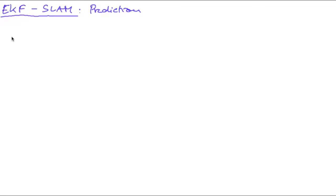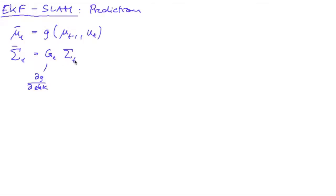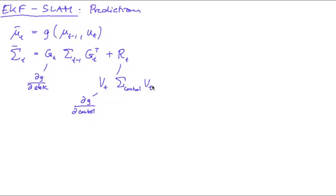Let's have a look at the prediction step. In the prediction, we computed our new mu from the possibly nonlinear function G, which took the old mu and our control. Then we computed our predicted covariance matrix as G_t times our old covariance matrix times the transpose of G, plus the noise from our control, which was a matrix V — the partial derivative of G with respect to the control — times the covariance of the control, times the transpose of V. This covariance was set up from the variance in the left and right control, assuming left and right noise to be independent, so the covariance matrix only contains the two variances.